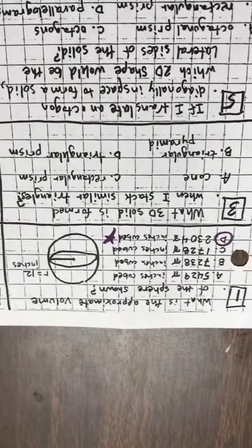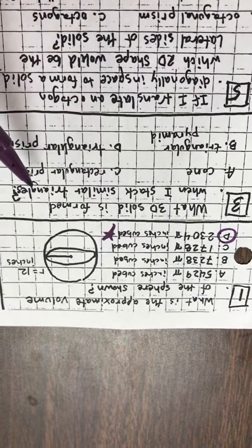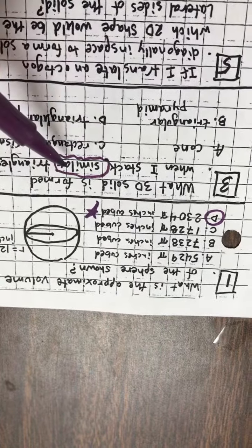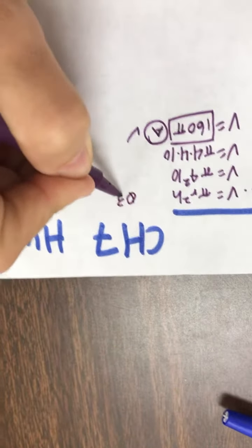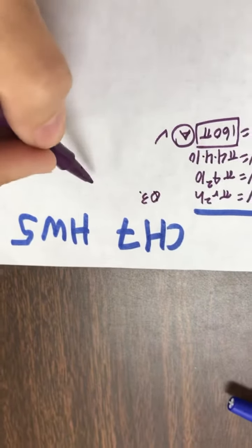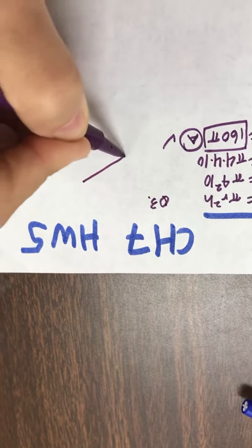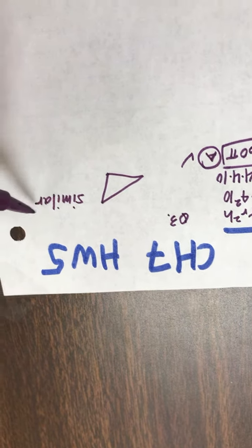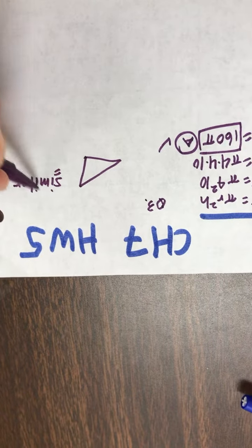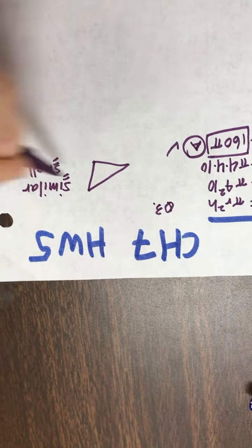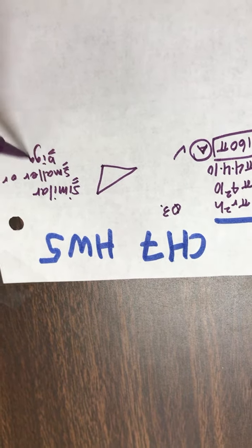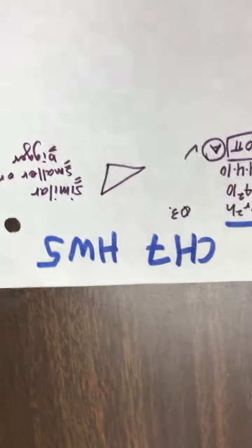What 3D solid is formed when I stack similar triangles? So the word similar is different than the word congruent. So on question 3, what 3D solid is made from stacking similar triangles. So I'm going to stack one triangle. And this word similar kind of makes me think of mommy and baby. So similar should make you think that the triangles might be getting smaller or bigger. Because similar doesn't mean congruent.